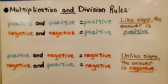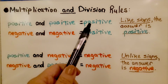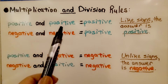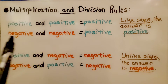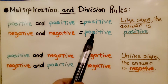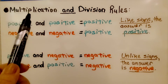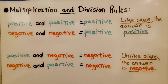To quickly review the rules for multiplication — and this also applies to division: when we have like signs, our answer is going to be positive. Two positives are like signs, so our answer is positive. A negative times a negative — like signs — our answer is also positive. When we have unlike signs, the answer is negative.